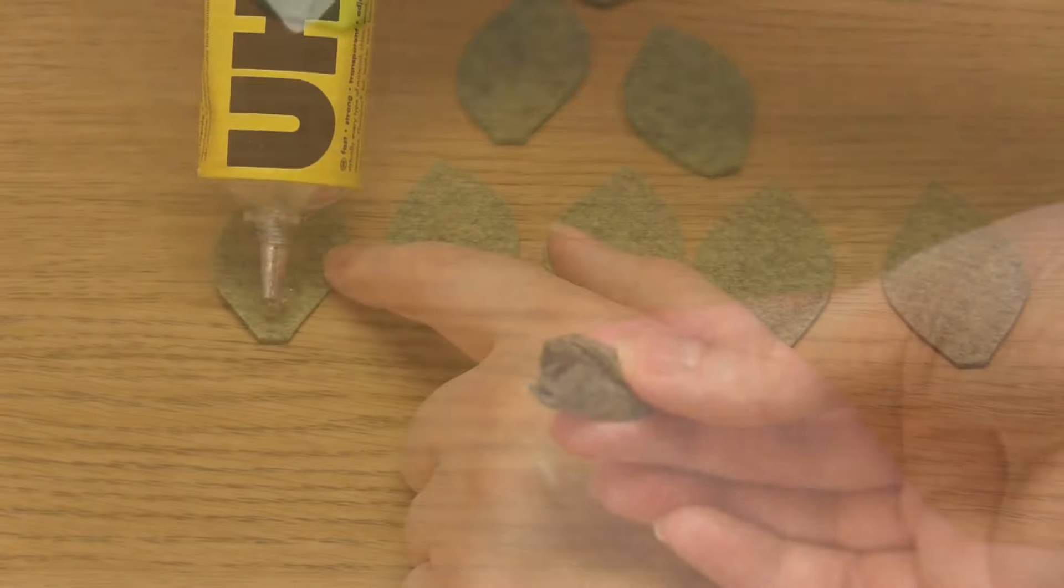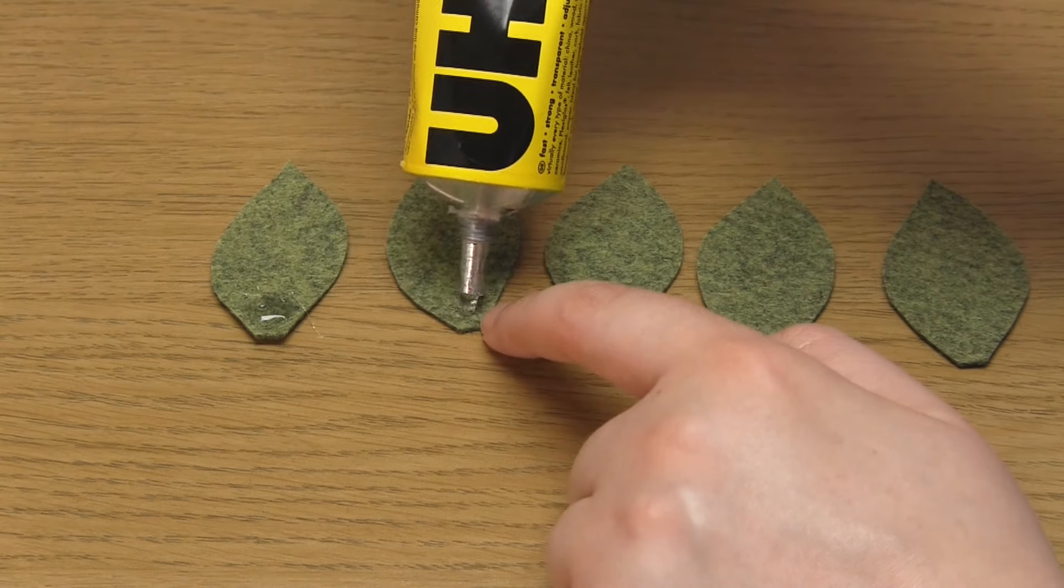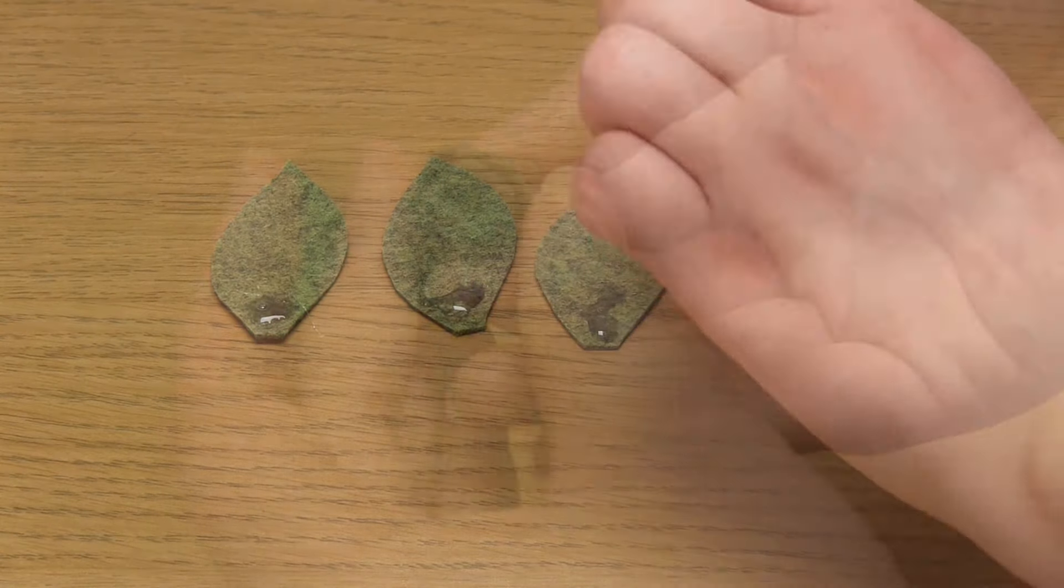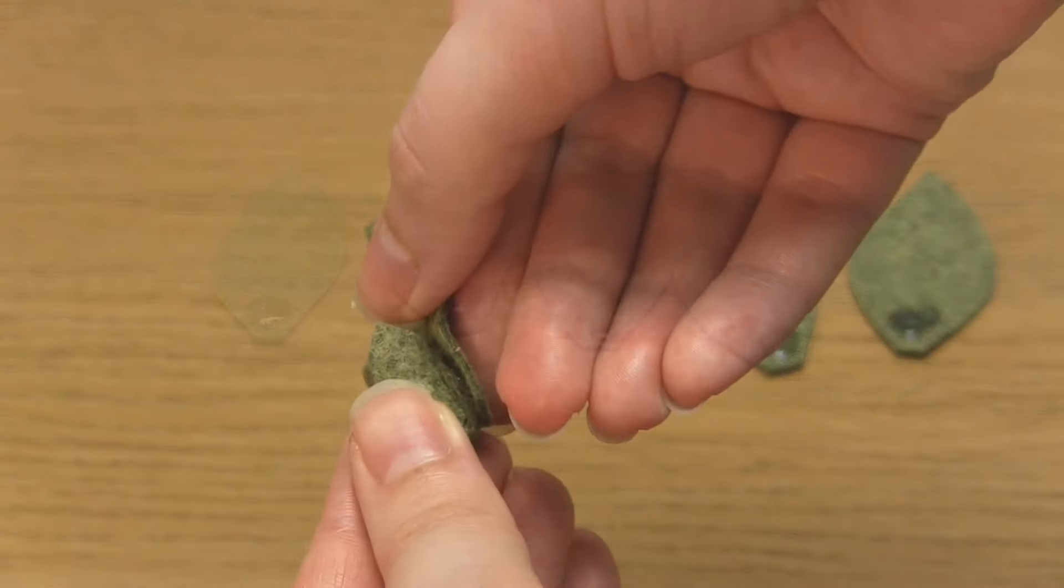Then you just need to attach the large leaves evenly around the outside of this centre. Only put glue on the base of these larger leaves, not too far up, otherwise the glue will be seen.